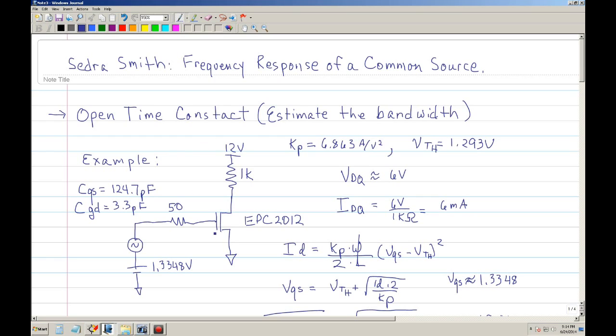The topology that I'll be using for the analysis example is the common source. So this is your gate, here's your drain, and here's your source. The model that I'll be using to verify my hand analysis is the EPC 2012. It's actually a gallium nitride MOSFET, supposed to be a very fast MOSFET, and it has small capacitance.